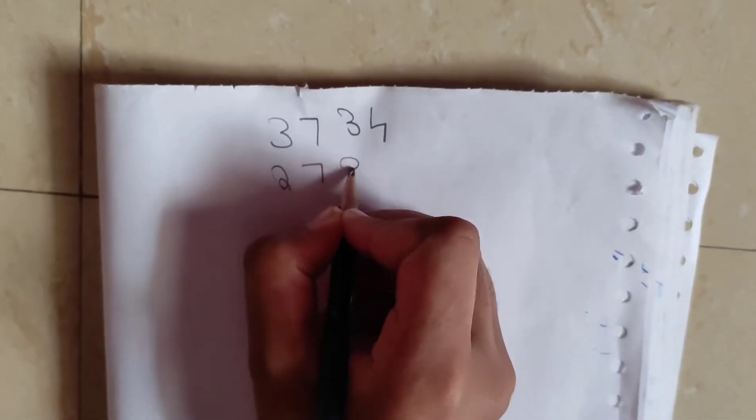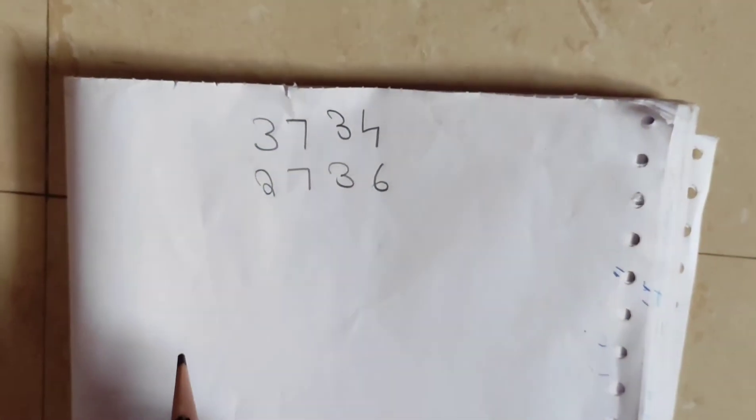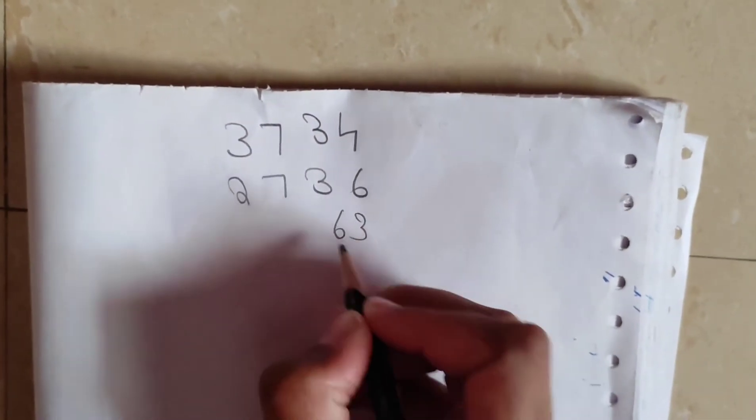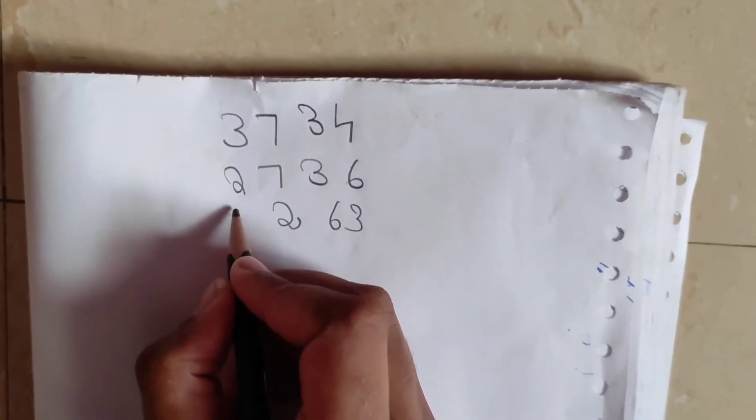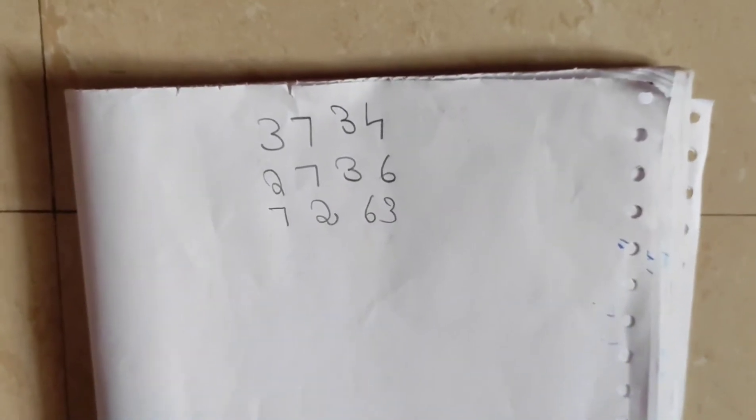Now you tell your spectator to write another 4 digit number. You tell I am going to write one number. And again, you should tell your spectator to write another 4 digit number.